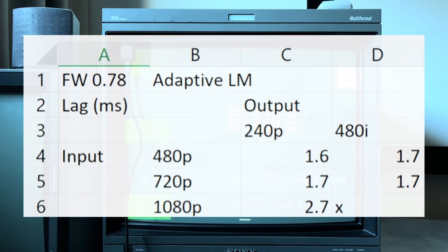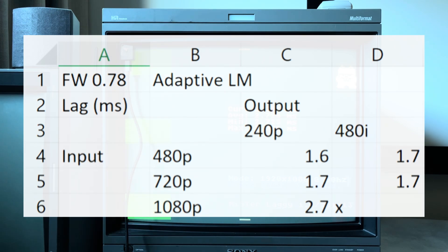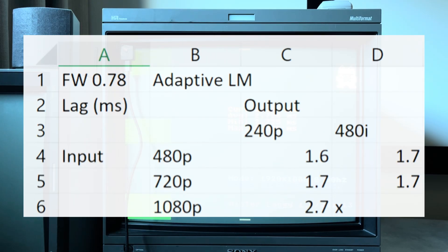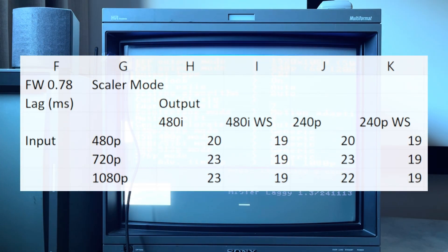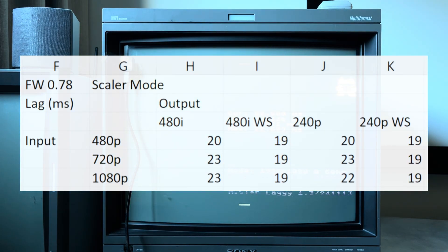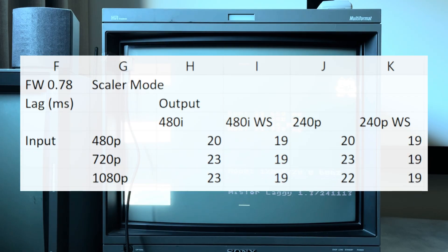As expected, these new line-drop modes have essentially zero lag — under 3ms for 1080p to 240p, and even less for 720p to 240p and 480i. Scalar mode is now a consistent 20 or so milliseconds across all input-to-output combinations when downscaling to any of the 15kHz resolutions, from 240p, 480i, 240p widescreen, and 480i widescreen.